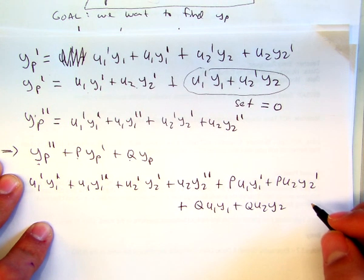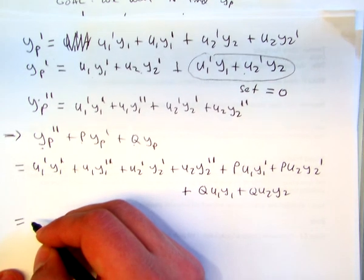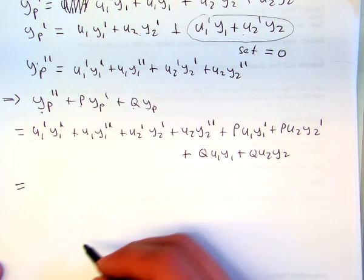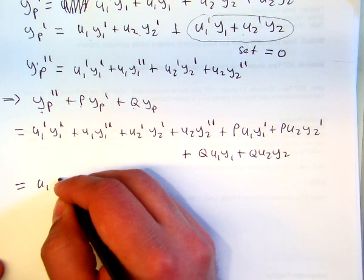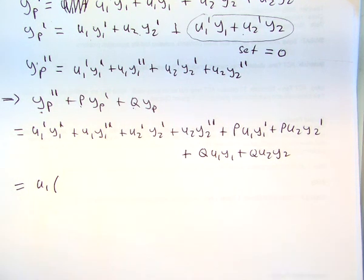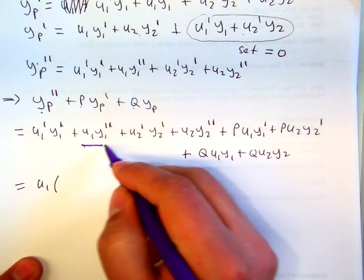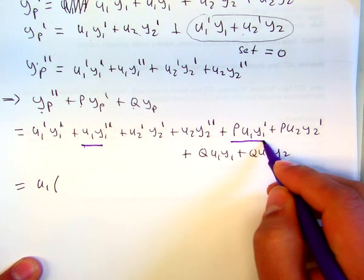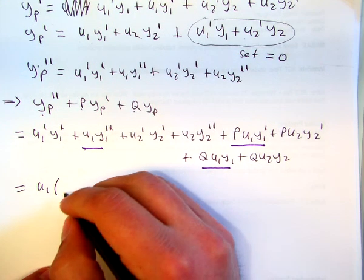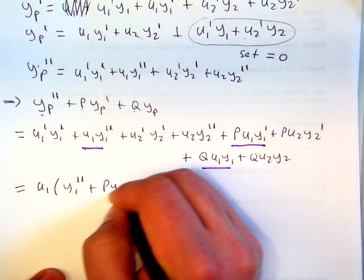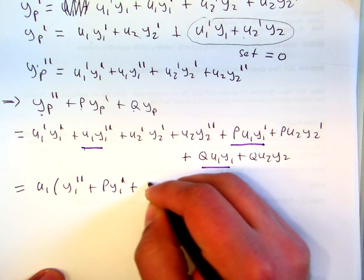Okay, and what I'll do now is group some terms together to get some stuff to cancel out. If I factor out u1 from the terms that have a u1 in common, so that's this term, that term, and this term, you get y1 double prime plus p y1 prime plus q y1.